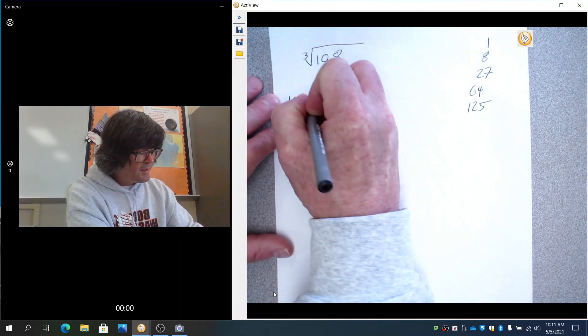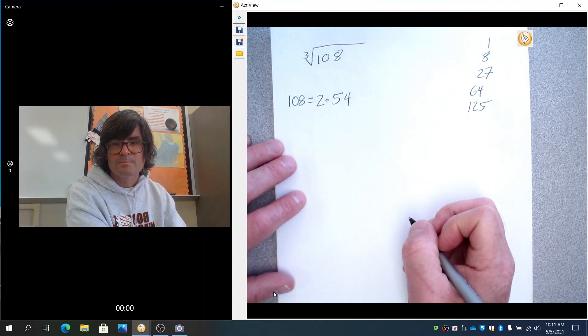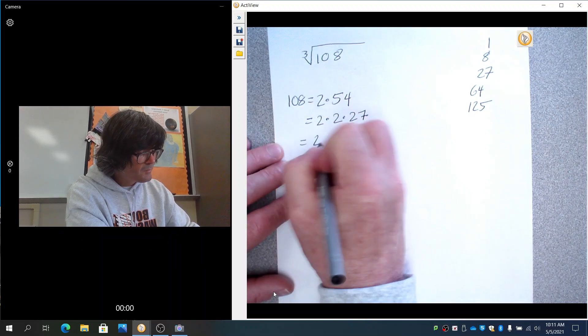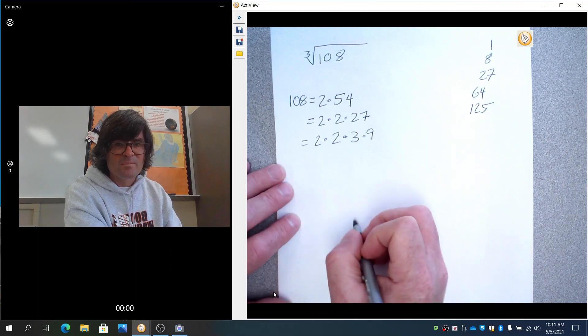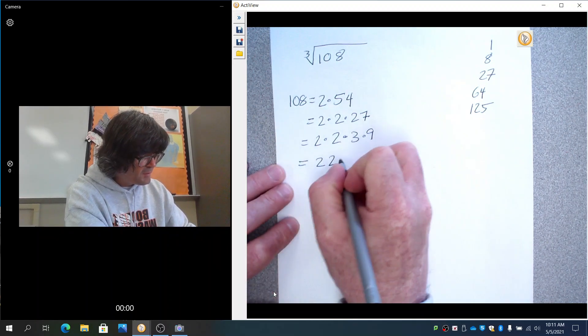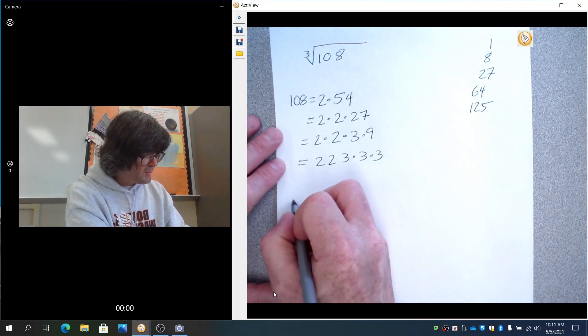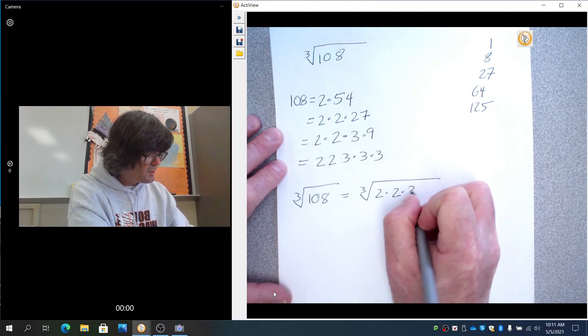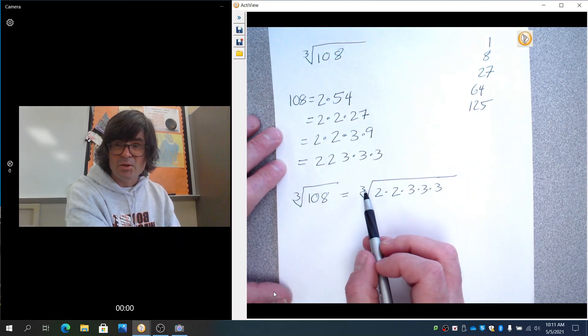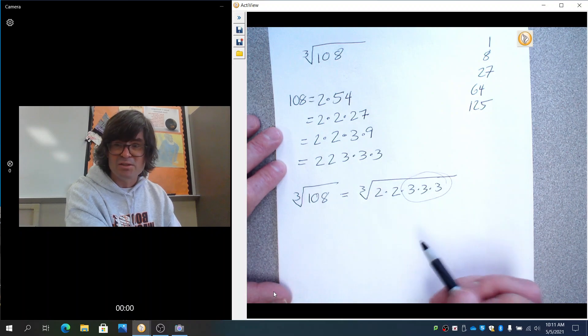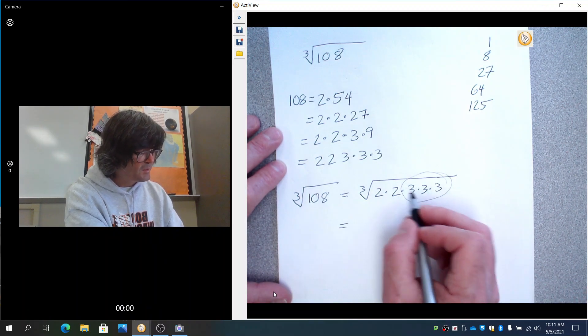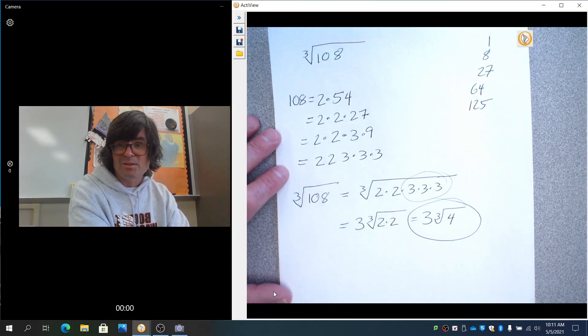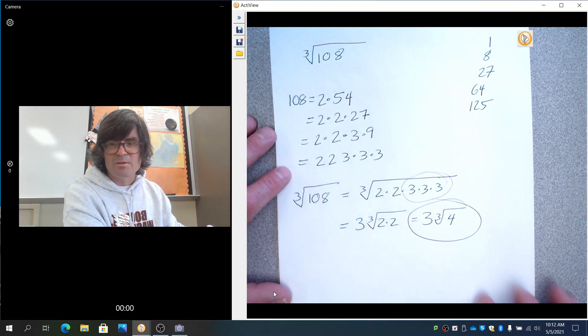I'm going to write 108. That is the same as 2 times 54. 2 is a prime number. And 54 is actually 2 times 27. 27 is 3 times 9. And 9 is 3 times 3. So this cube root of 108 equals the cube root of 2 times 2 times 3 times 3 times 3. We're looking at a cube root—what is multiplied times itself 3 times. You can see now there's 3 threes. So if you take the cube root of 3 times 3 times 3 out, it's just 3 times the cube root of 2 times 2, which is 3 cube roots of 4.